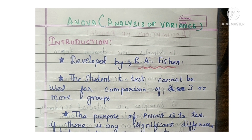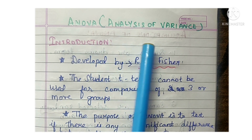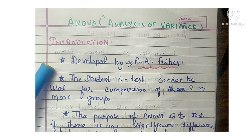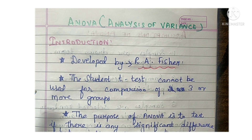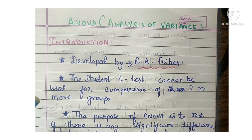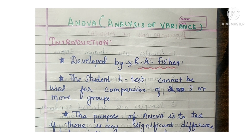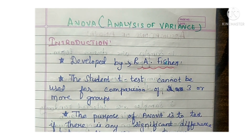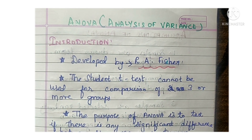ANOVA is nothing but analysis of variance. It was developed by Ronald A. Fisher, also known as RA Fisher — spelled F-I-S-C-H-E-R.